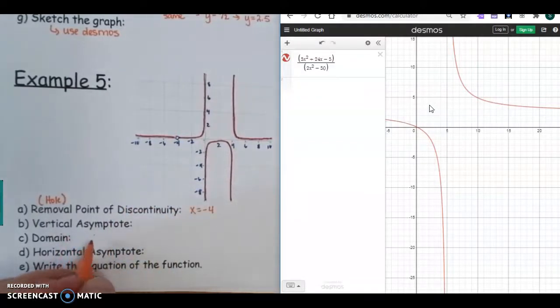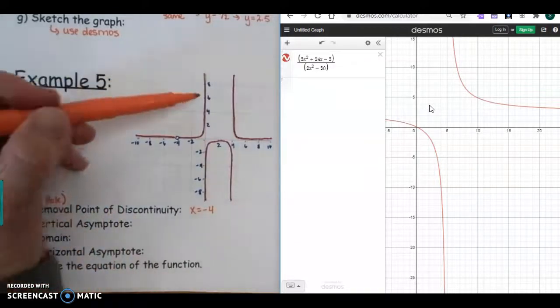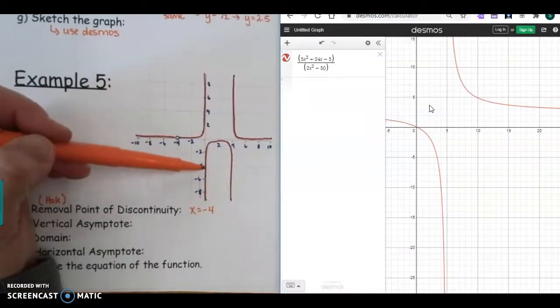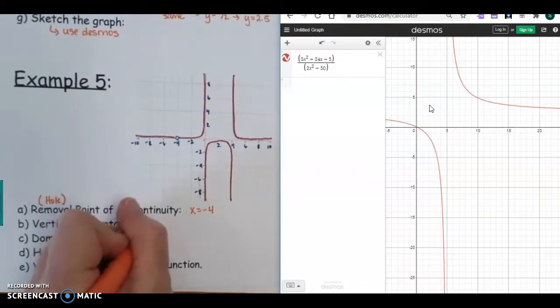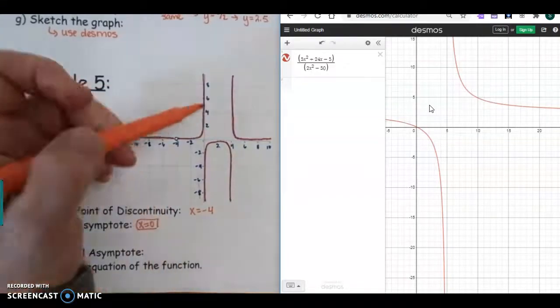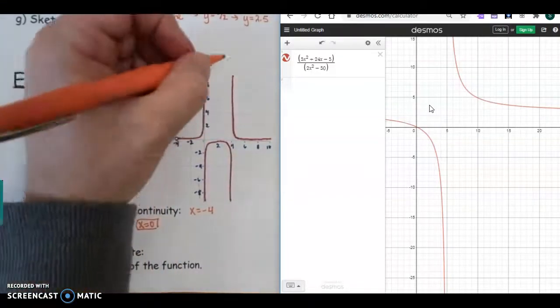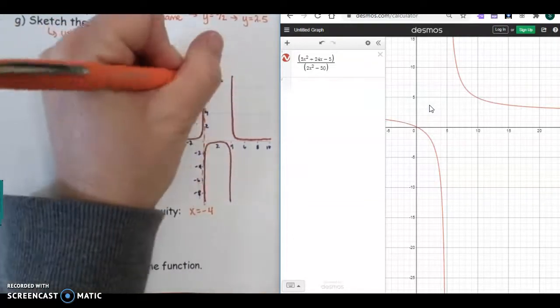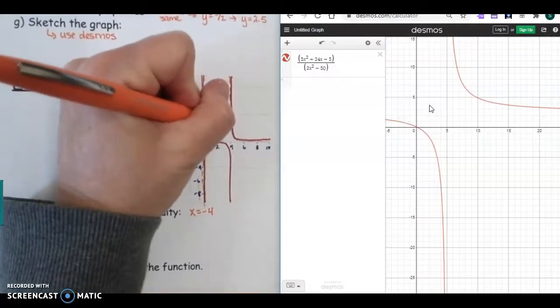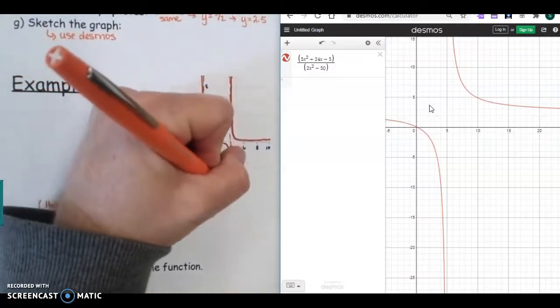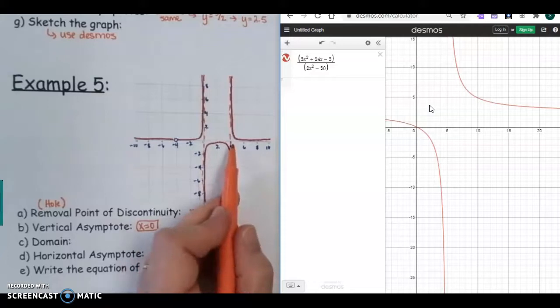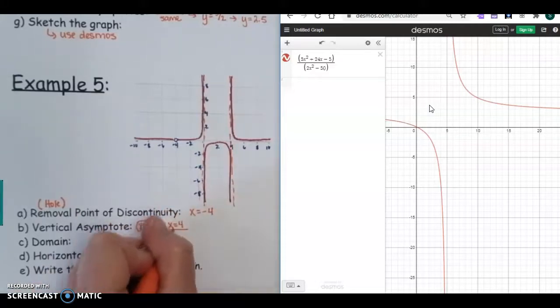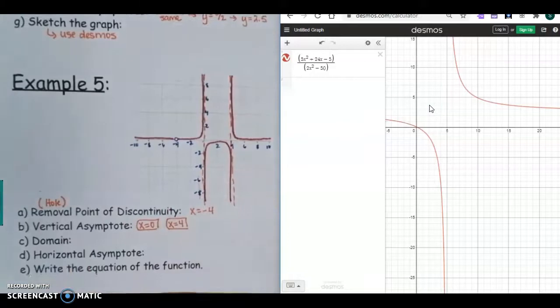The vertical asymptote. So vertically, it never touches the y-axis. It gets really close, but it never touches. So that's at X = 0. And then if we hop over here, and usually, guys, the asymptotes are drawn with a dashed line. There's another vertical asymptote at X = 4.